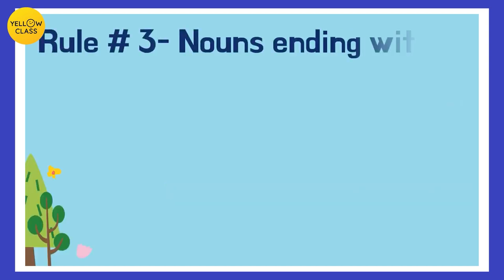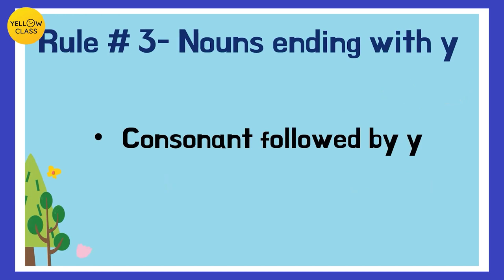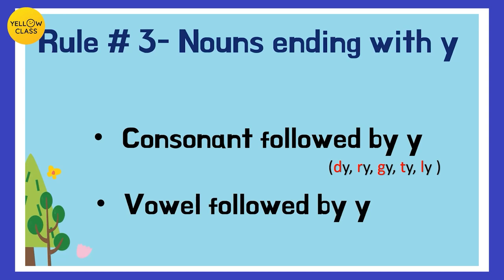Now rule three is very important. It's for all nouns ending with the letter 'y' — consonant 'y' at the end. This rule has two parts. Part one: consonant followed by 'y' — if the word has a consonant and then a 'y' at the end, such as 'dy', 'ry', 'gy', 'ty', or 'ly'. Part two: a vowel followed by 'y', such as 'oy' or 'ay'. Rules for words with 'y' are different depending on what comes before it.